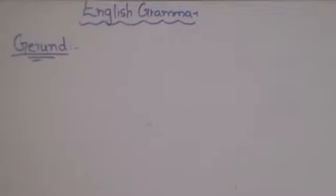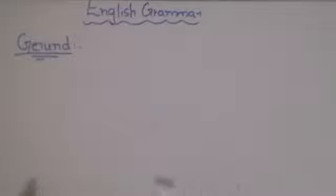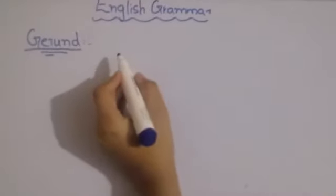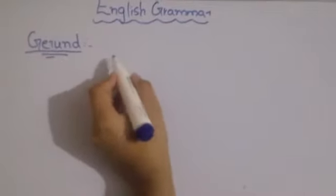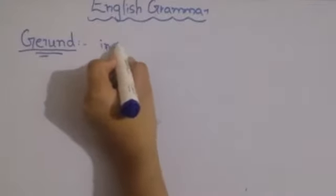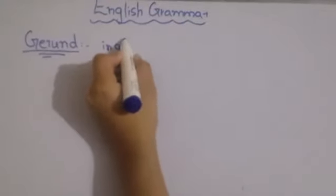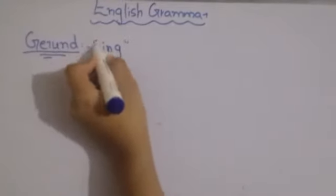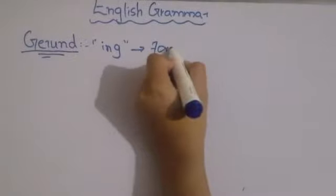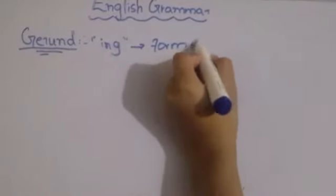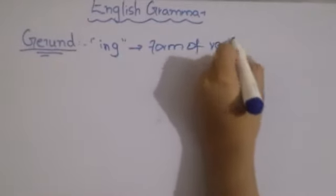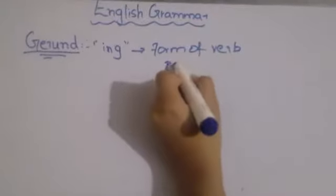If we look at Gerund, what is Gerund? Gerund is very important. One key clue is that Gerund is always used with the -ing form. With -ing, we will use the first form of a verb.